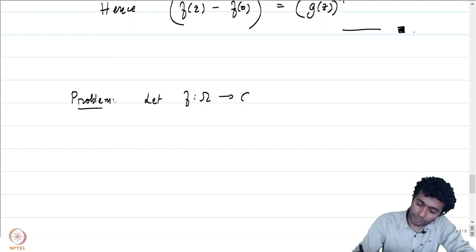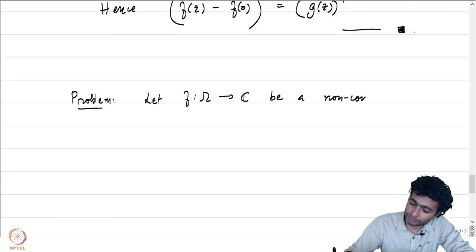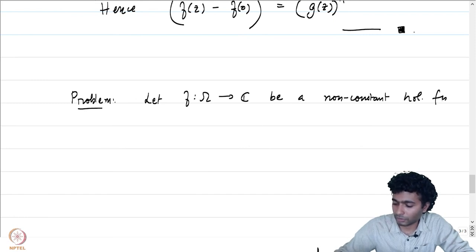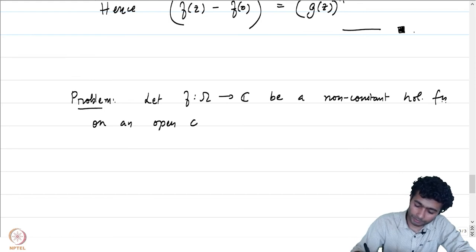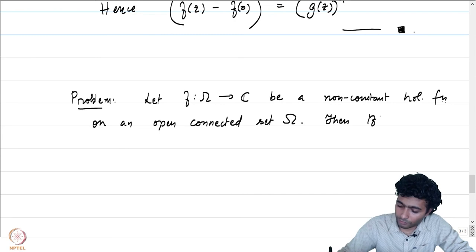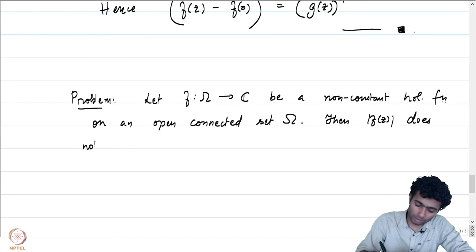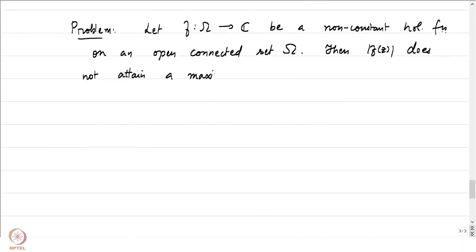Let us now give a more general maximum principle for holomorphic functions. Let f from omega to C be a non-constant holomorphic function on an open connected set omega. Then |f(z)| does not attain a maximum in omega. This is slightly more general — we are showing there is no maximum in the entire domain omega without restricting to any compact set.